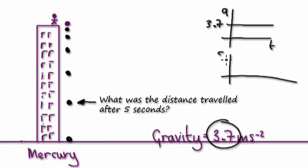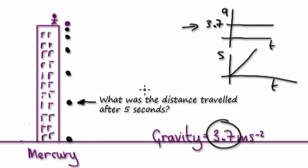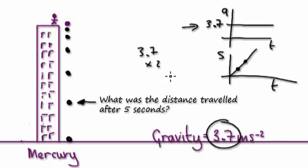Now the speed-time graph will look like this. When you have an acceleration of 3.7, it means every second the speed will increase by 3.7. So after one second this will be 3.7; after two seconds, this will be 3.7 times 2, which is 7.4.